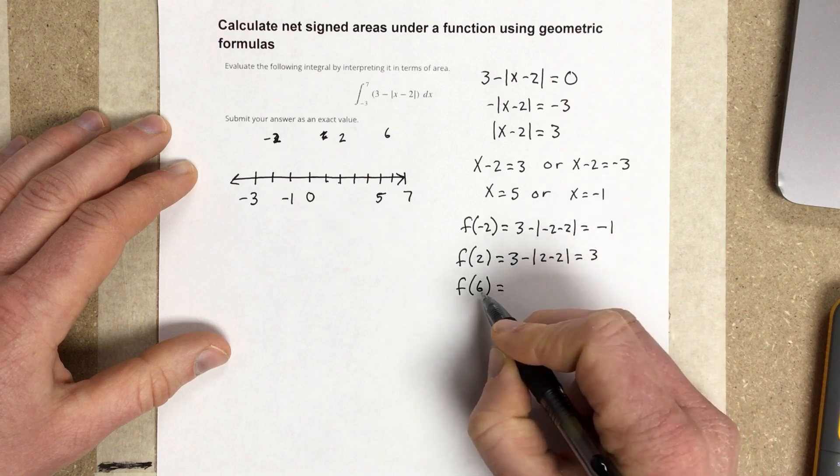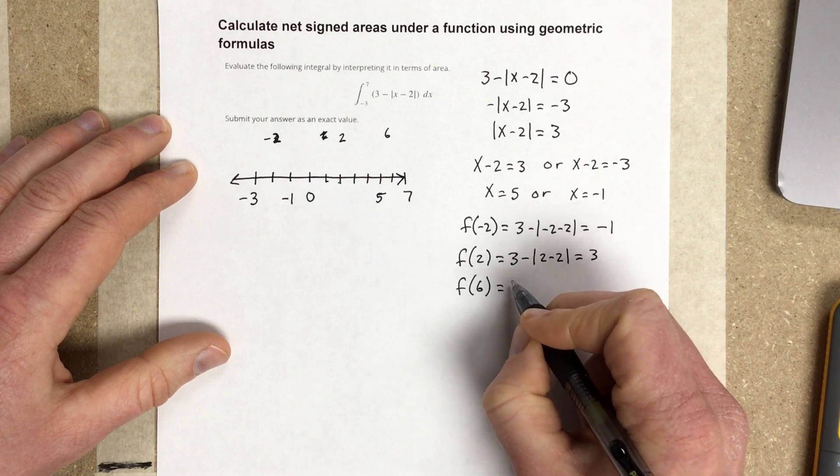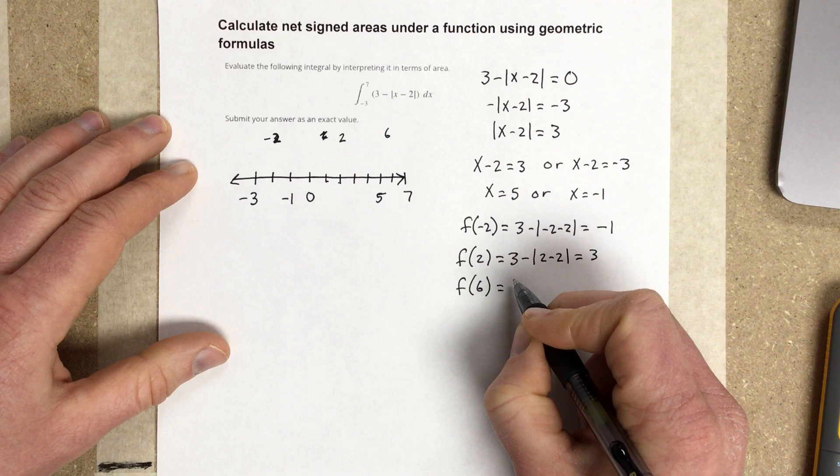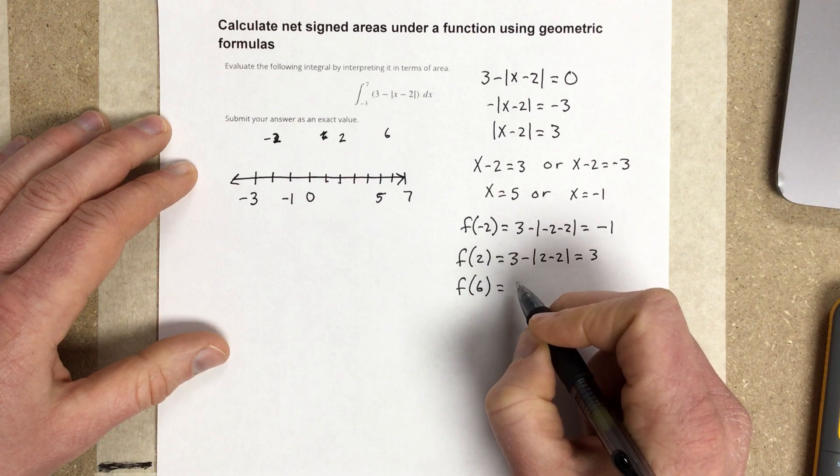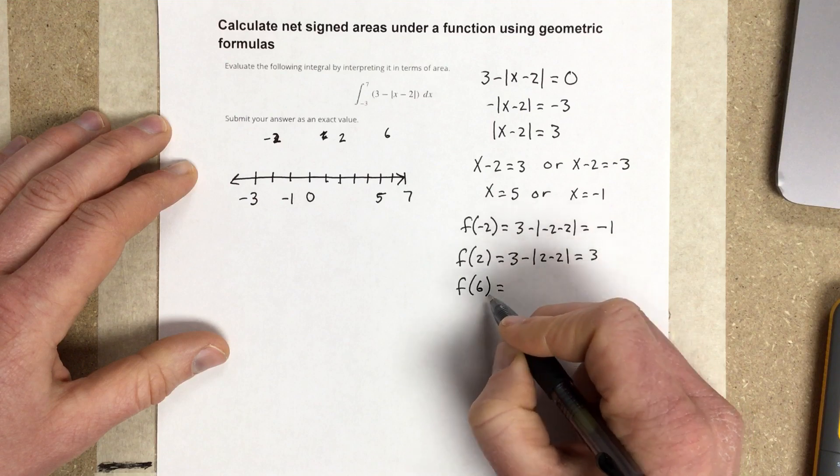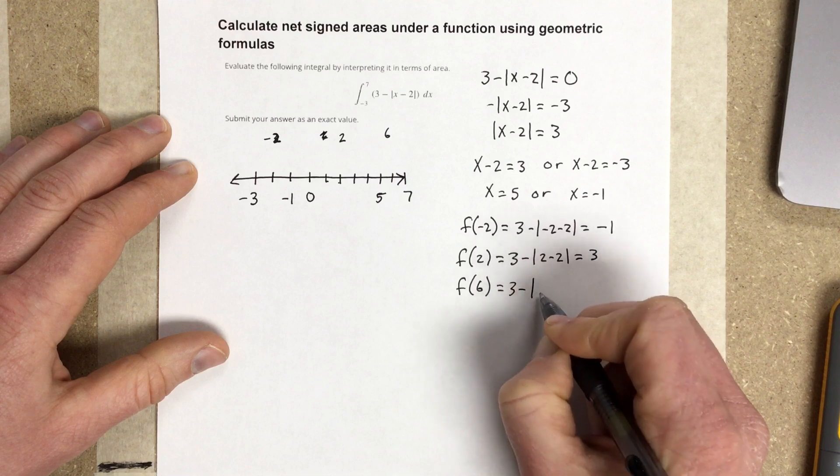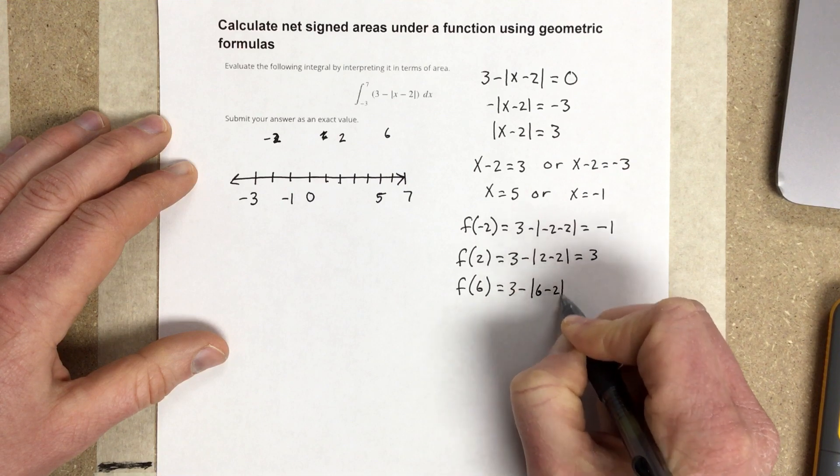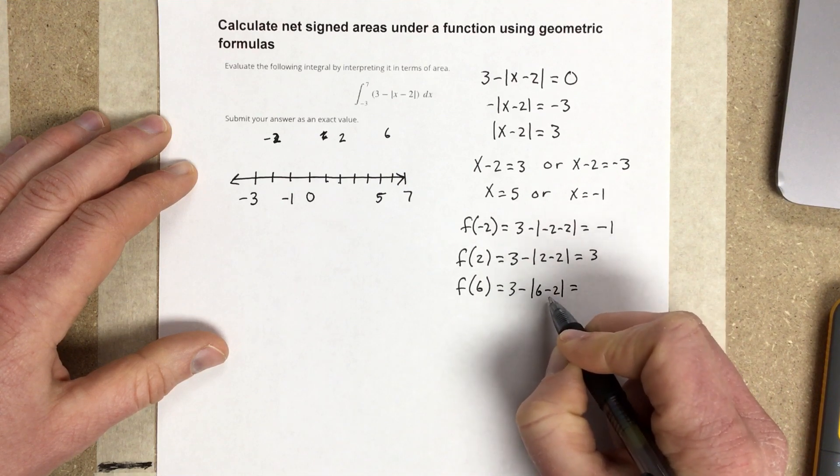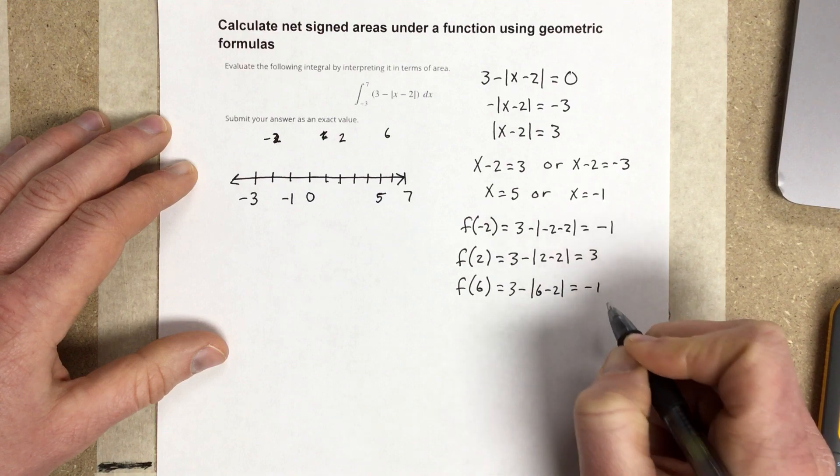And then, if I do f of 6, f of 6 would be 3 minus absolute value of 6 minus 2. So, I end up with 4. So, 3 minus 4 is negative 1.